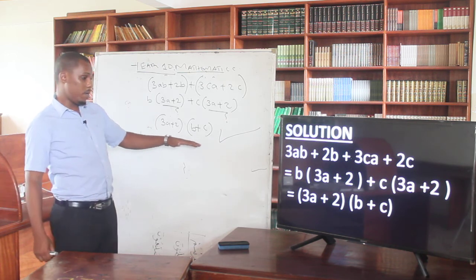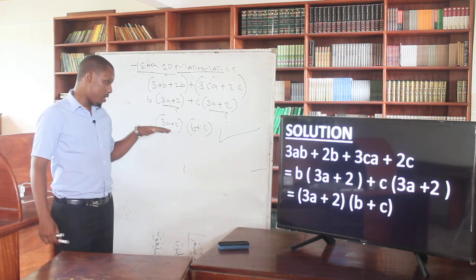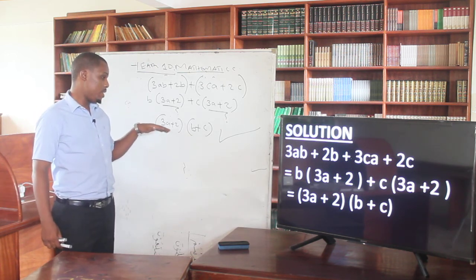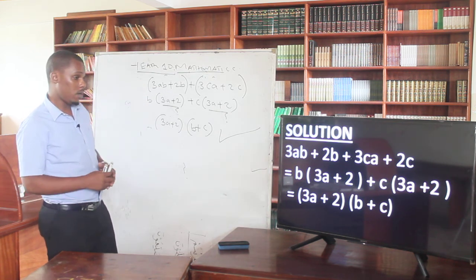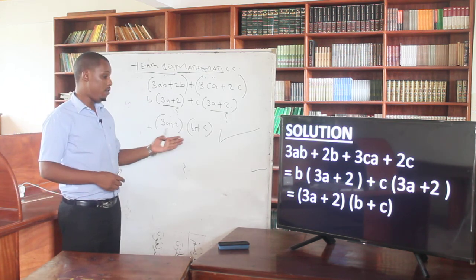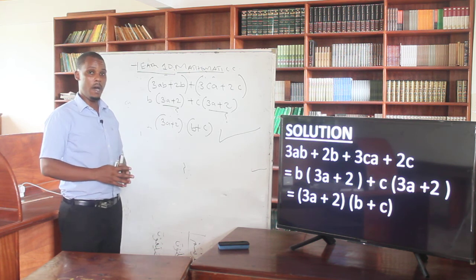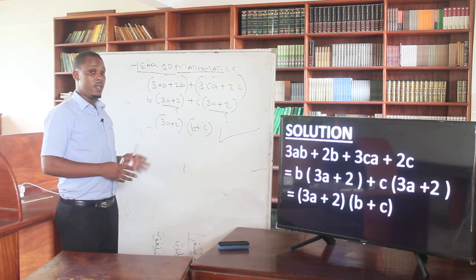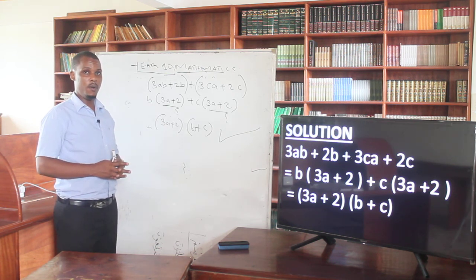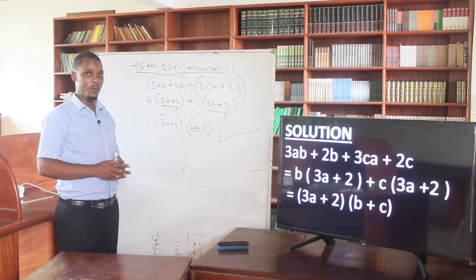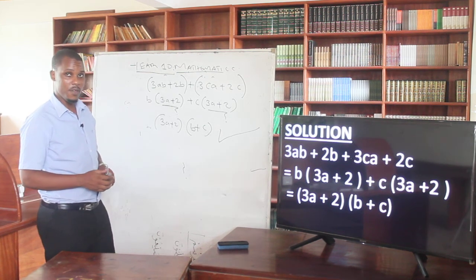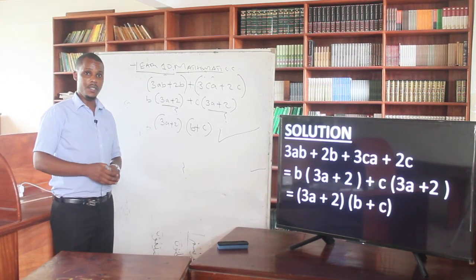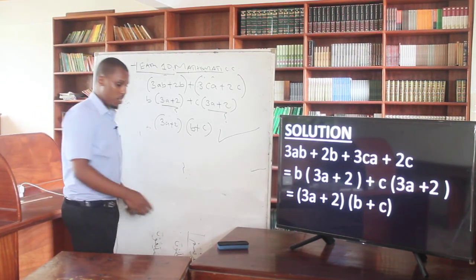So we group the common bracket factor together: (3a + 2)(b + c). That is the factorization by grouping. It is very different from what we do in the other concepts. So this is known as factorization by grouping. There is still another example coming up on the next slide, which will focus again on the concept of factorization by grouping. Check my next slide — we have a review!